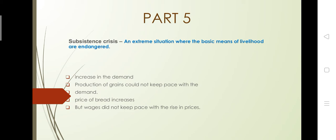For example, suppose the population of a particular school rises — more students take admission — but according to the new admissions, the uniform is not available in the market. So what will happen? The existing price of the uniform will rise. You can correlate this.